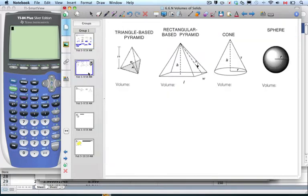And so now, triangle-based pyramid. Well, with pyramids, any kind of pyramid, it's always, as opposed to the area of the base times the height, it's always one-third the area of the base times the height.